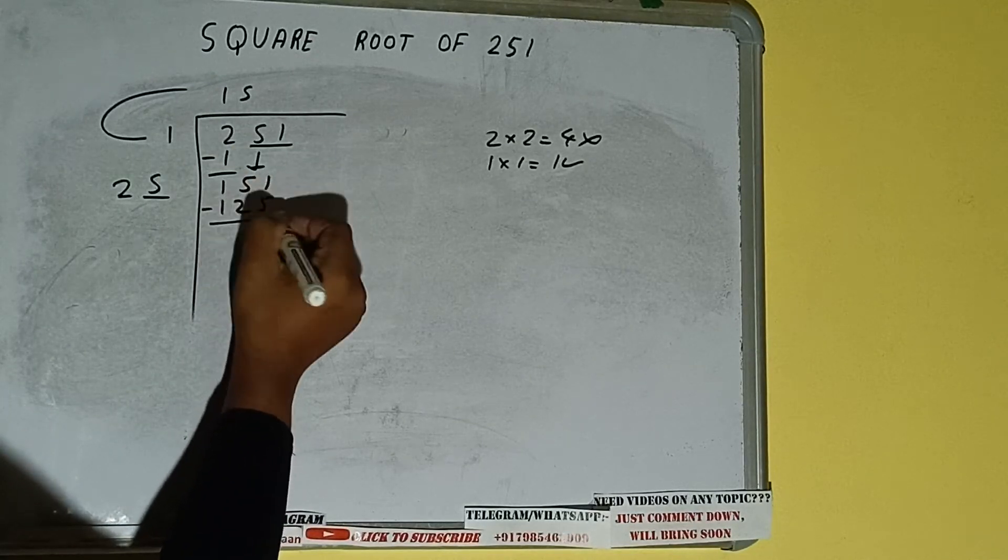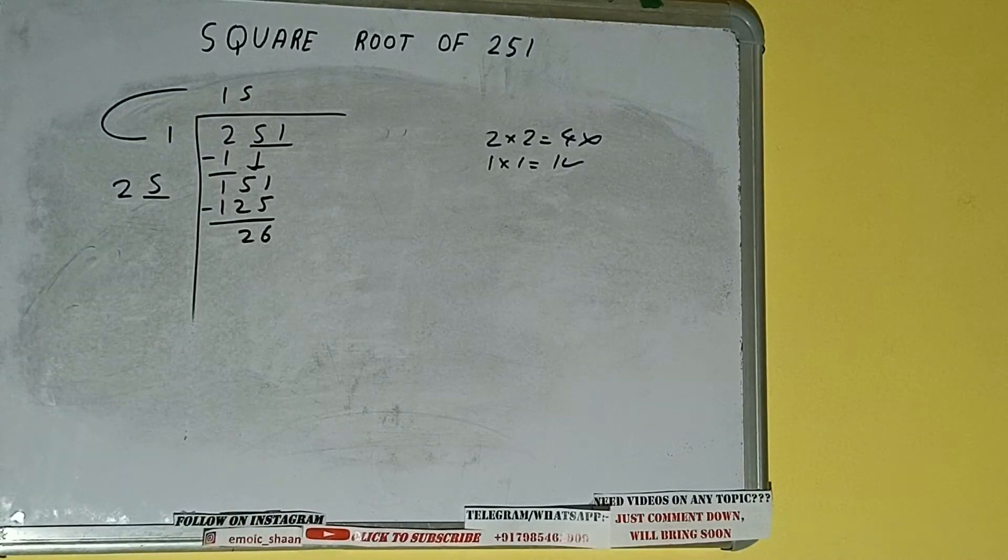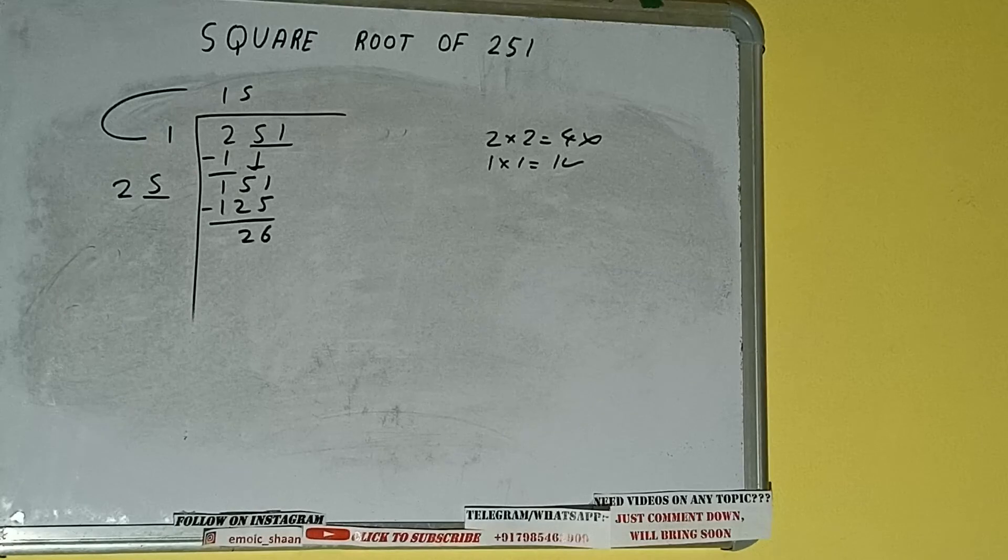125 subtract, 26 will be left. Now 25 into five we did, so add both. So 25 plus five will be 30.